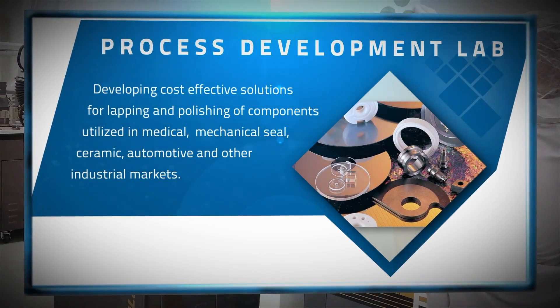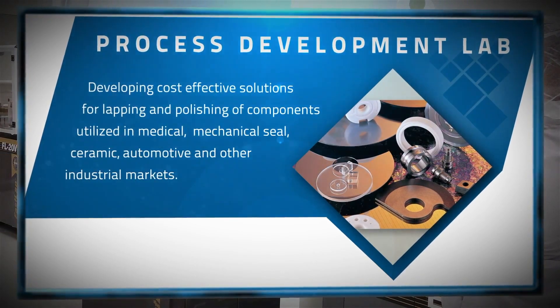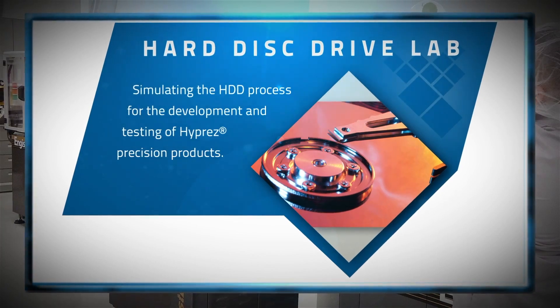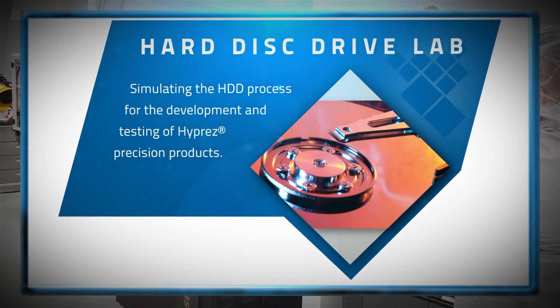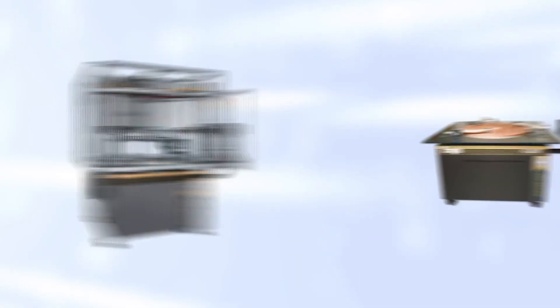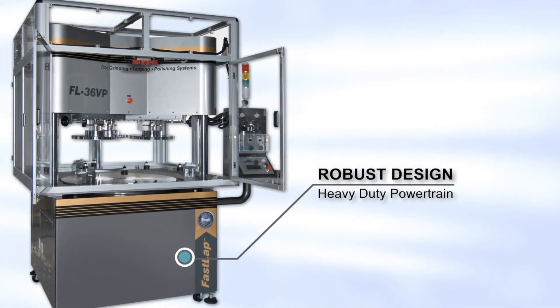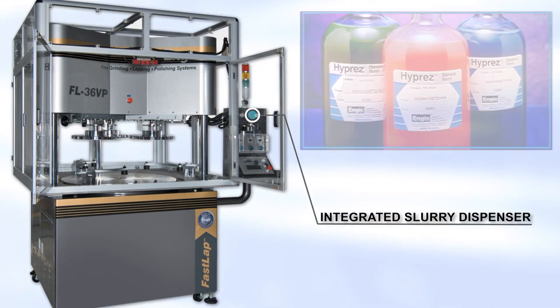They continue to provide systems for increasingly demanding tolerances. Precision lapping and polishing performance results in lower costs and increased productivity. All Angus machines are corrosion resistant, feature heavy-duty powertrains, and are engineered for maximum system compatibility.